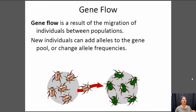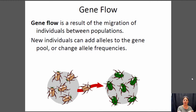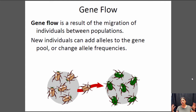Gene flow is basically the movement of individuals from one population to another — you can think of it as migration, immigration, or emigration. The way to remember this and not confuse it with genetic drift: if a river is flowing, it's moving from one location to another. So gene flow means individuals flowing from one population to another. Gene flow can bring new alleles into a population or change the frequency of alleles by bringing those alleles along with the individuals who move.